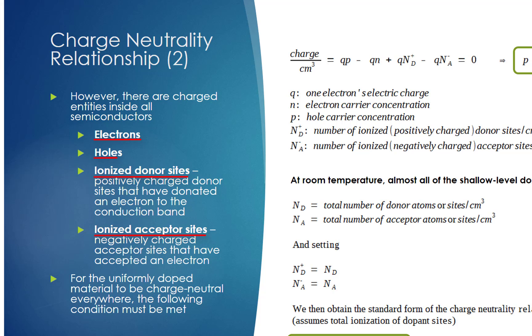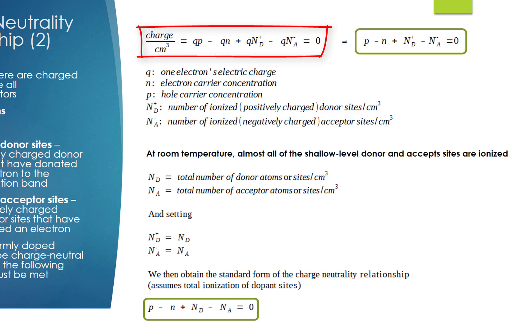Since the uniformly doped semiconductor is charge neutral everywhere, this means that the sum of all these charges is zero. Here the formula shows the relationship.